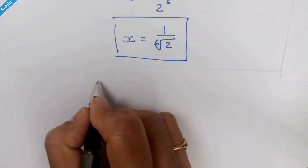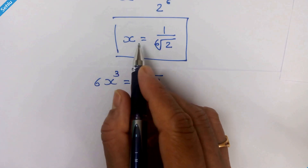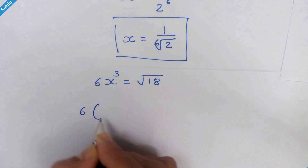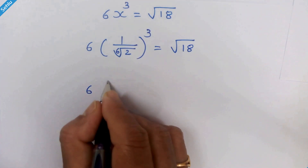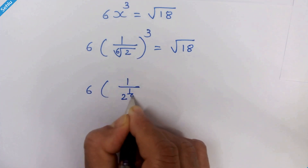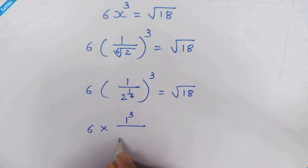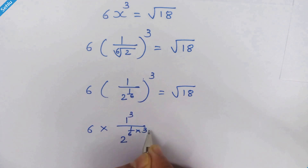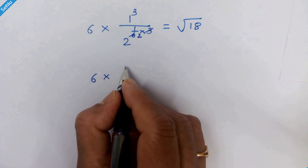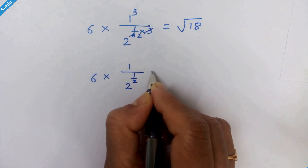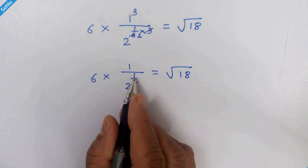That is our answer. Now let's verify by substituting x = 1 / ⁶√2 back into the original equation. We have 6 × (1 / 2^(1/6))³. This equals 6 × 1³ / 2^(1/6 × 3) = 6 × 1 / 2^(1/2). We need this to equal √18. So we check: 6 / 2^(1/2) = 6 / √2.